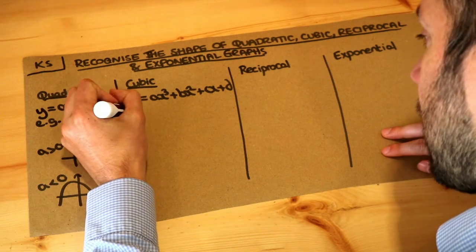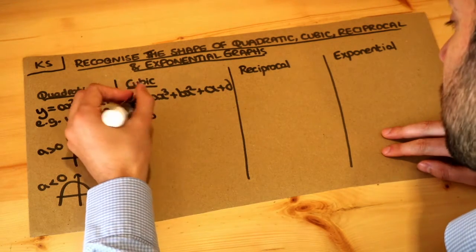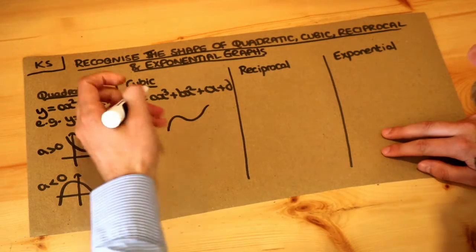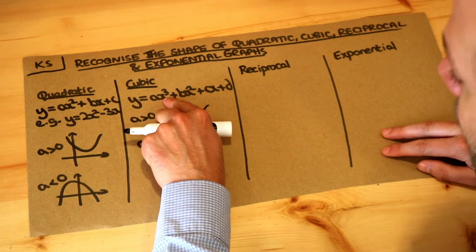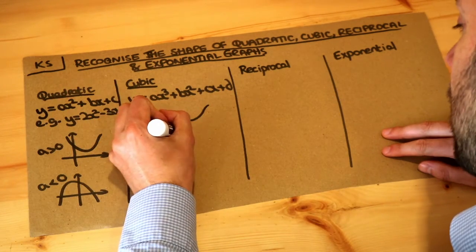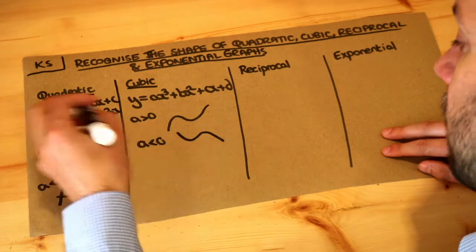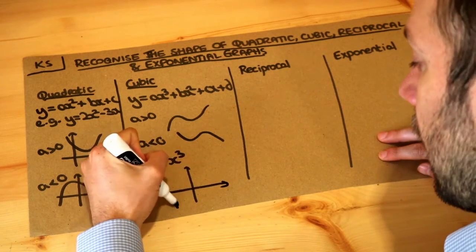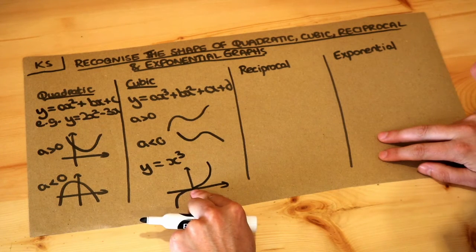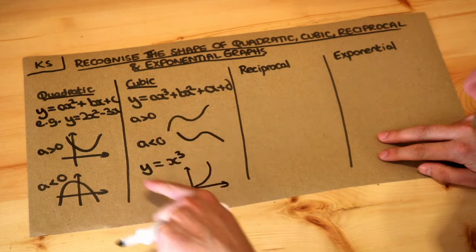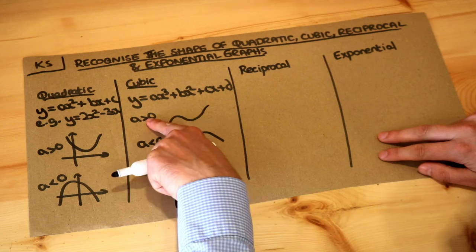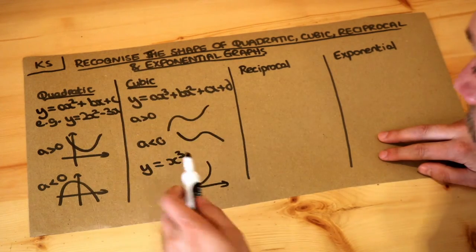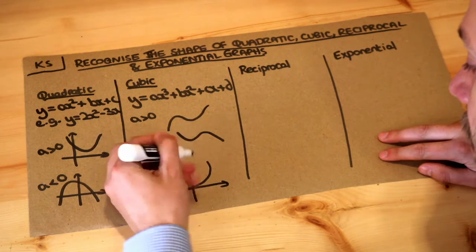If a is positive — so you have 3x cubed or 2x cubed — you get a kind of uphill roller coaster type shape, so it has two turns: a turn right and then a turn left. And if a is less than zero — a negative cubic like minus 3x cubed — then it has a downhill roller coaster shape. For a simple cubic like y equals x cubed, it goes through the origin and is flat at the origin, but because it is a positive cubic it still has an uphill shape with a right turn and a left turn — it's just horizontal in the middle.